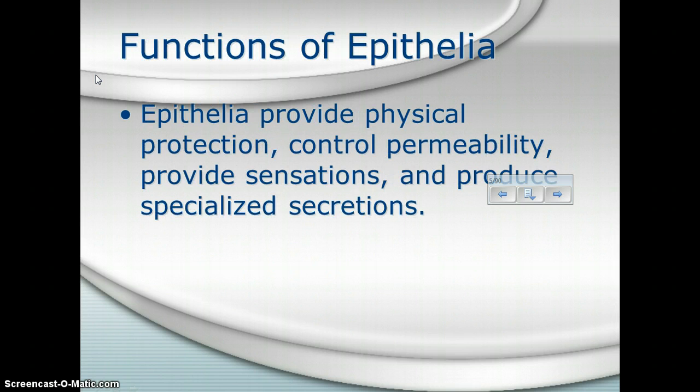Epithelial cells also include specialized cells that can secrete different types of products, like your sweat. We're always going to want to go back and remember the job that these cells do for the body. They provide protection, they control permeability, they provide sensations, and they produce specialized secretions.